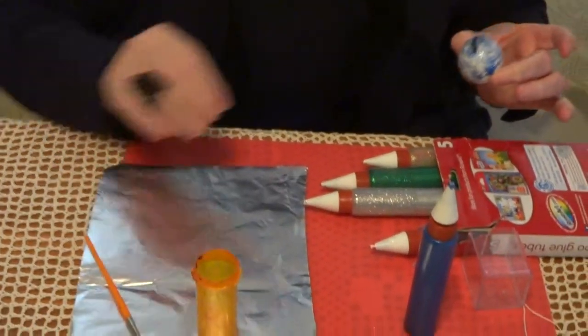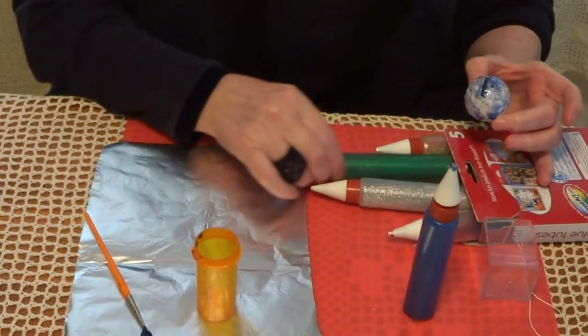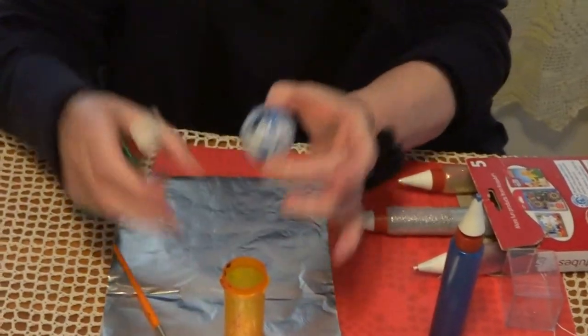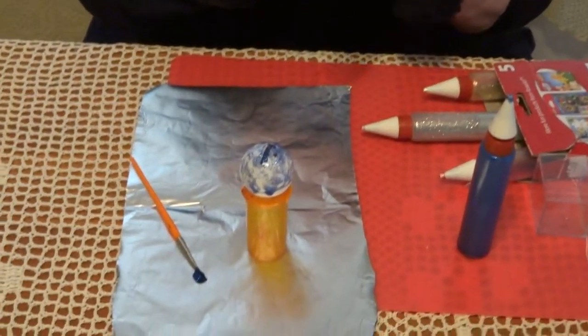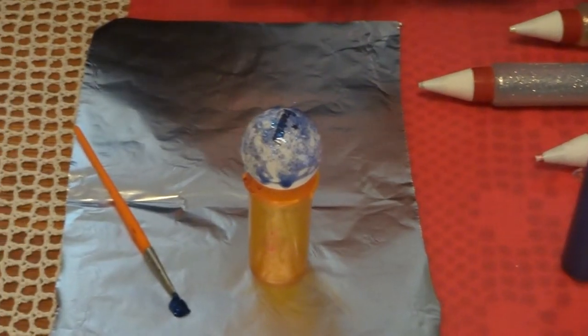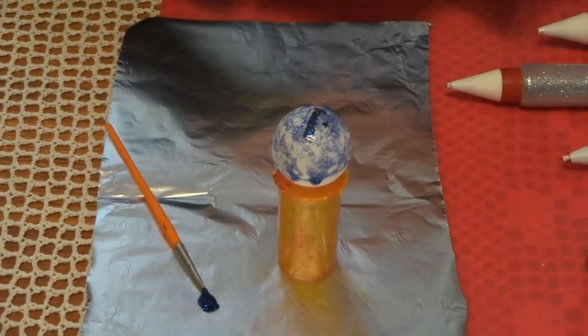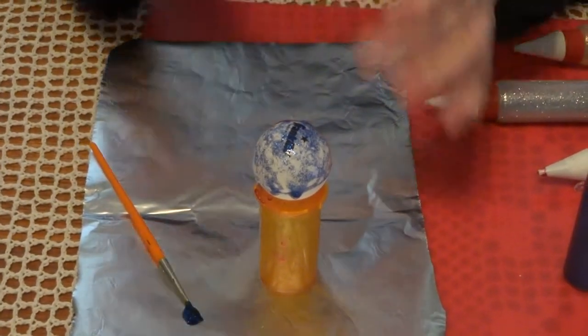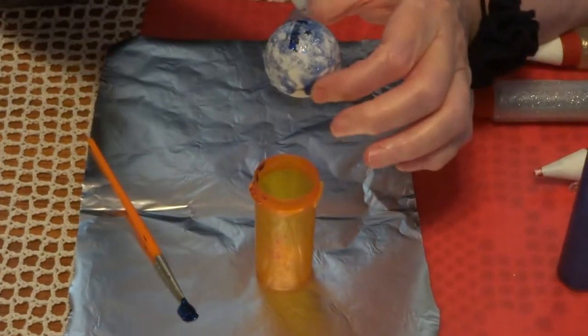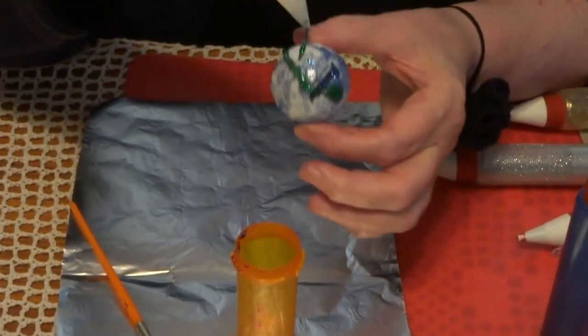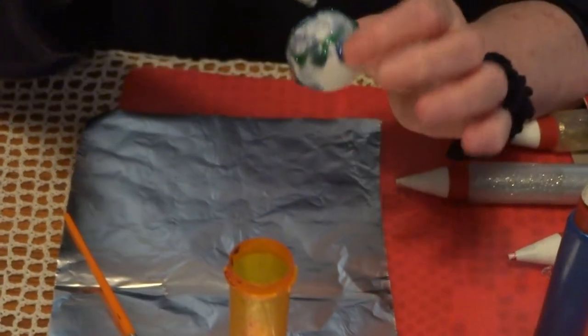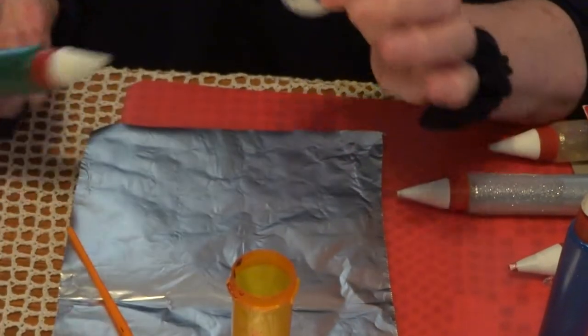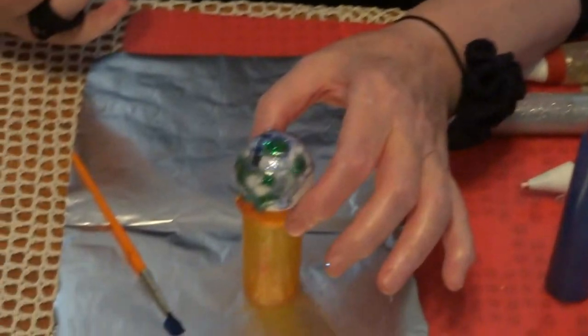Now you can use a different color, let's take green, and I put it here and paint again. You can make circles, you can make dots, and let it rest here.